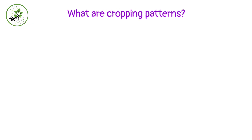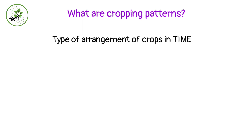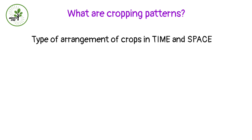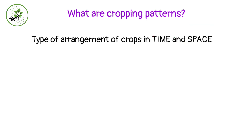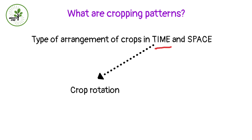What are cropping patterns? There is one basic statement that defines cropping pattern: the type of arrangement of crops in time and space. Notice the two words — time and space. Arrangement of crops with respect to time — can we say crop rotation is a cropping pattern where crops are changed after a year?